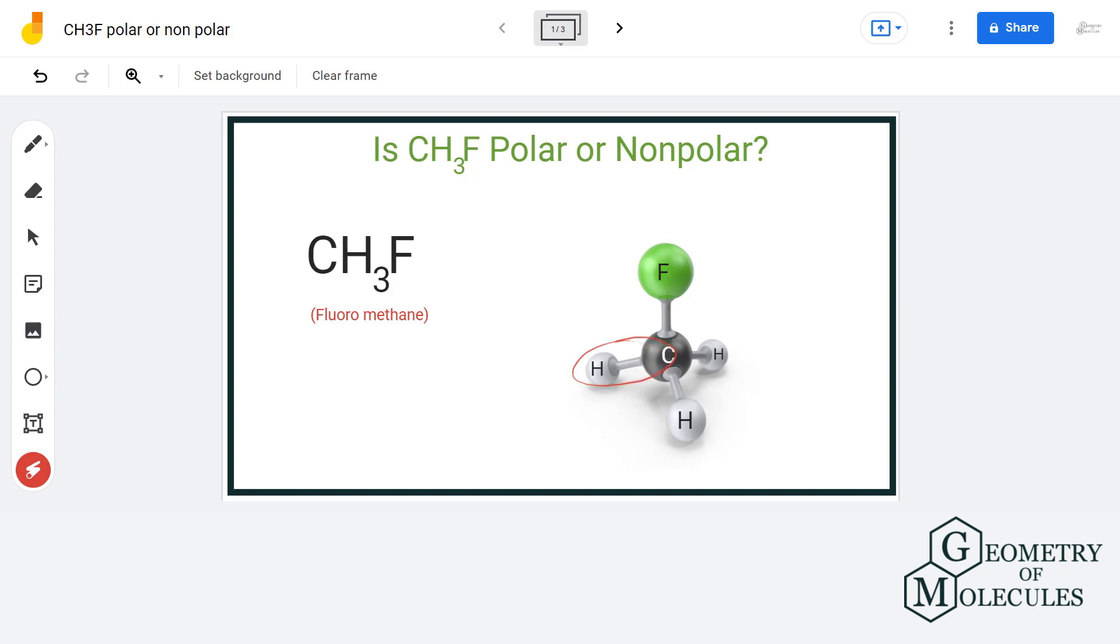The dipole moment of CH bond is very less as the electronegativity difference is only 0.35 and it is not big enough to induce polarity. And so CH bonds are considered as non-polar. On the other hand, in CF bond, that is carbon and fluorine bond...